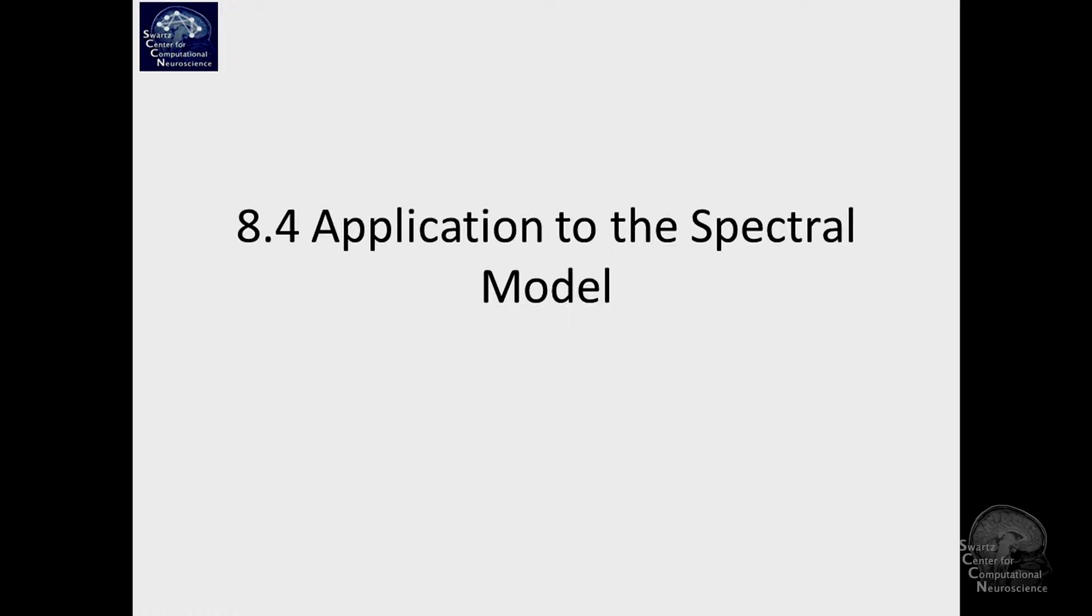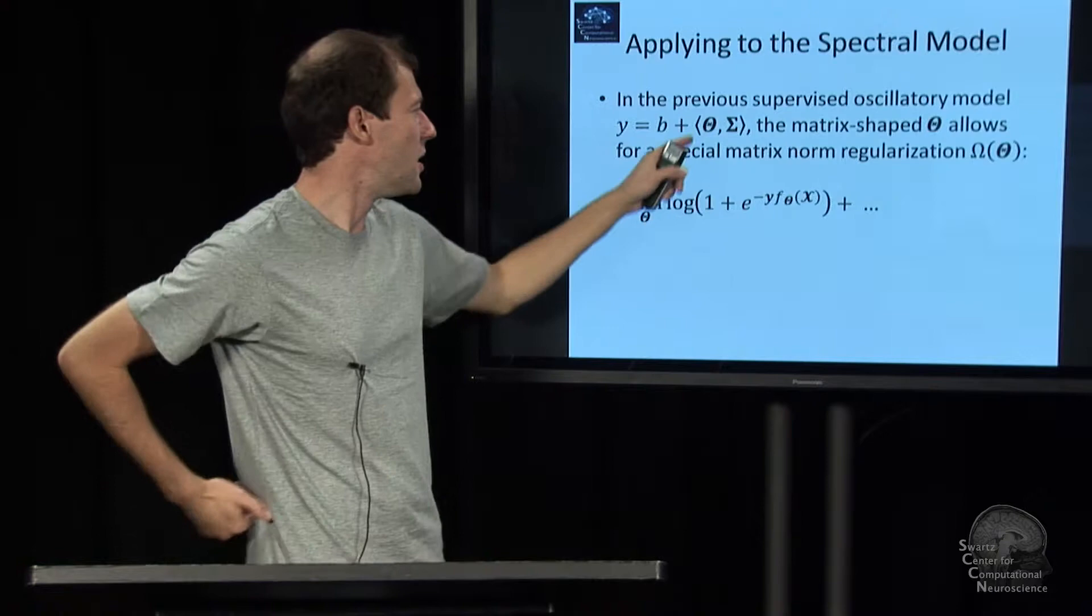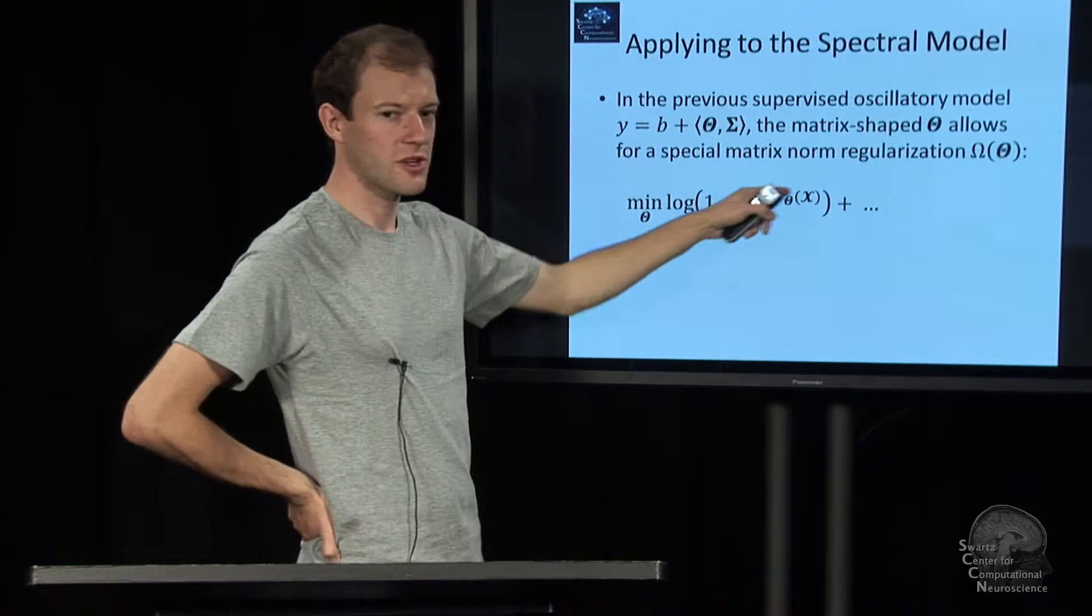The prediction function was basically just a linear function: b plus theta in a product between some capital theta and some covariance matrix. That's the covariance matrix of some trial. This is a vector writing style, by the way.